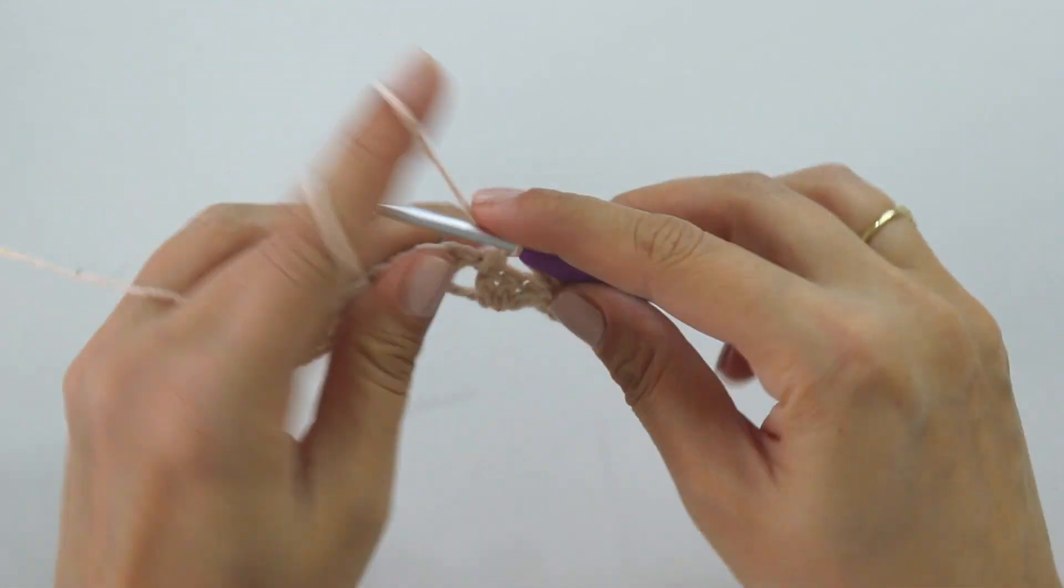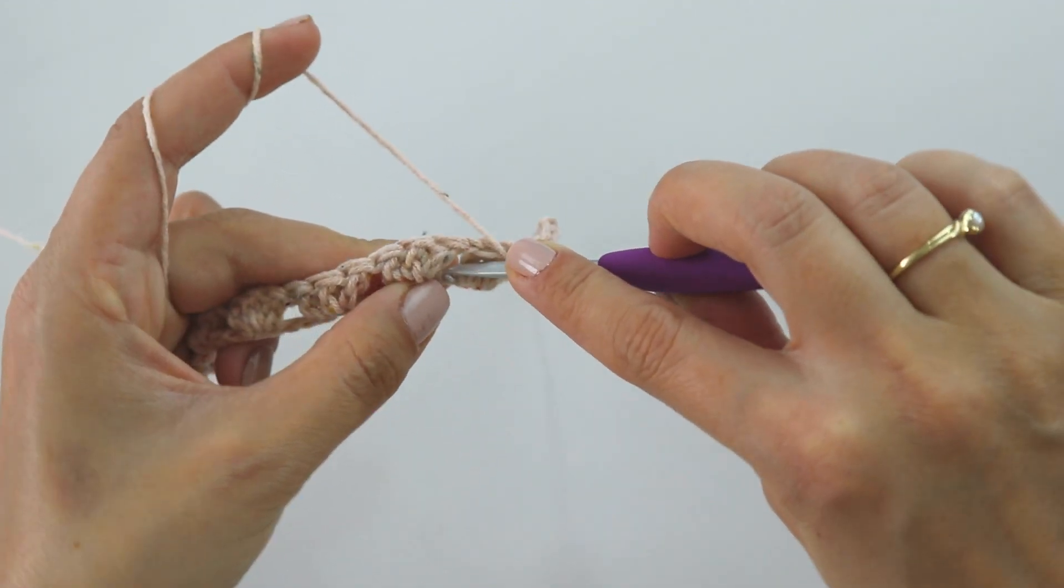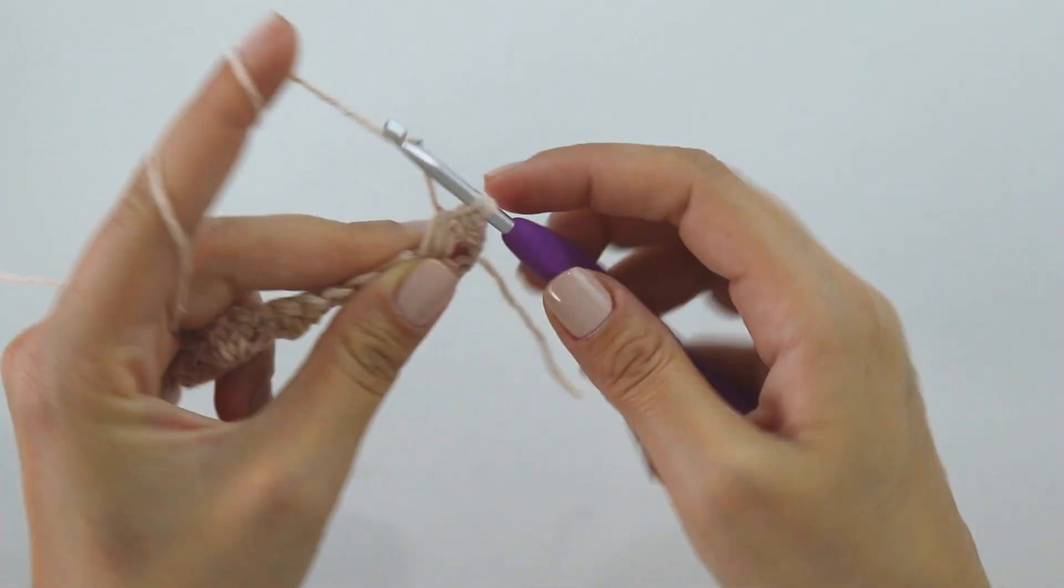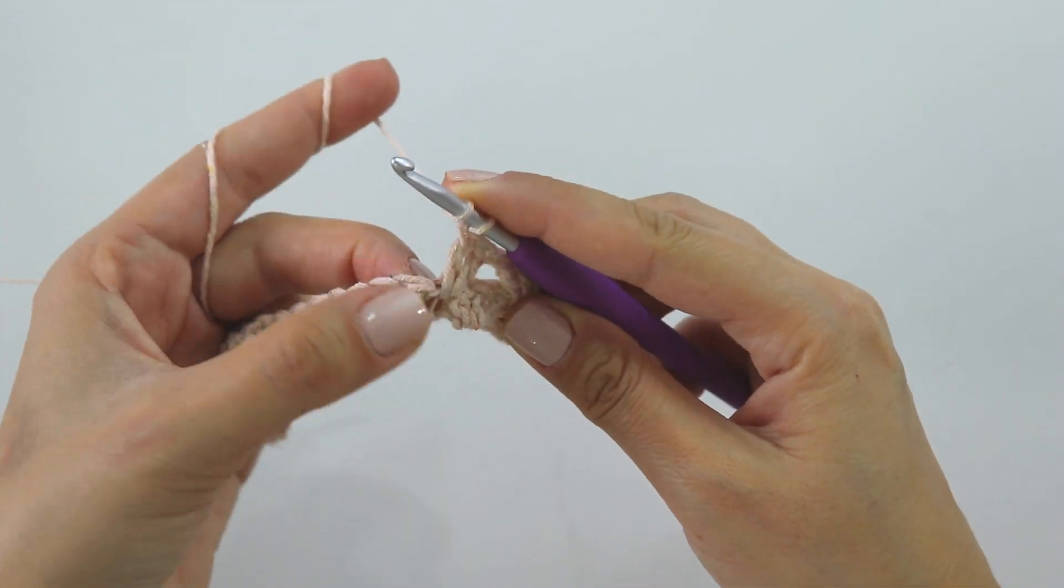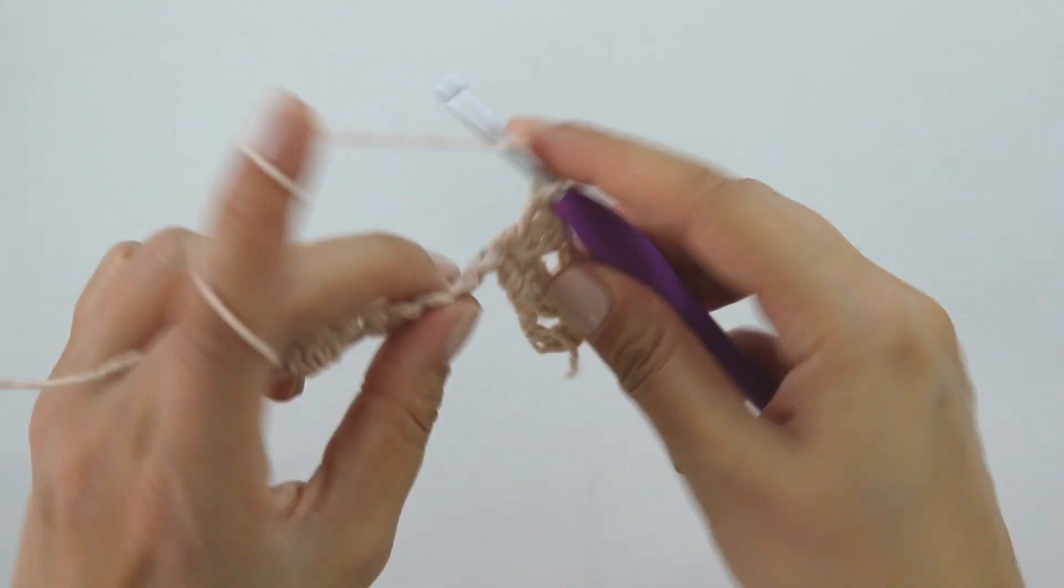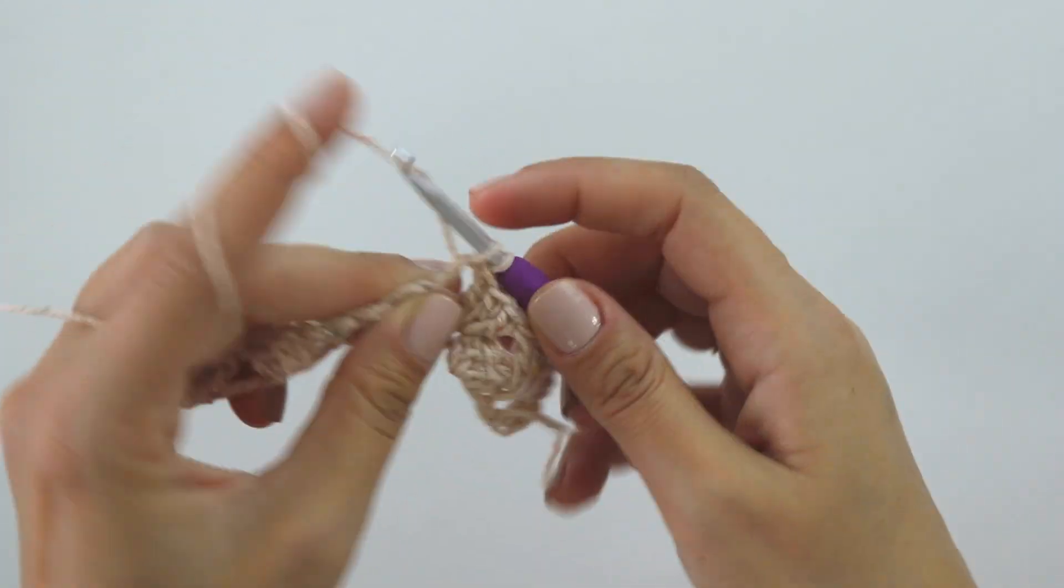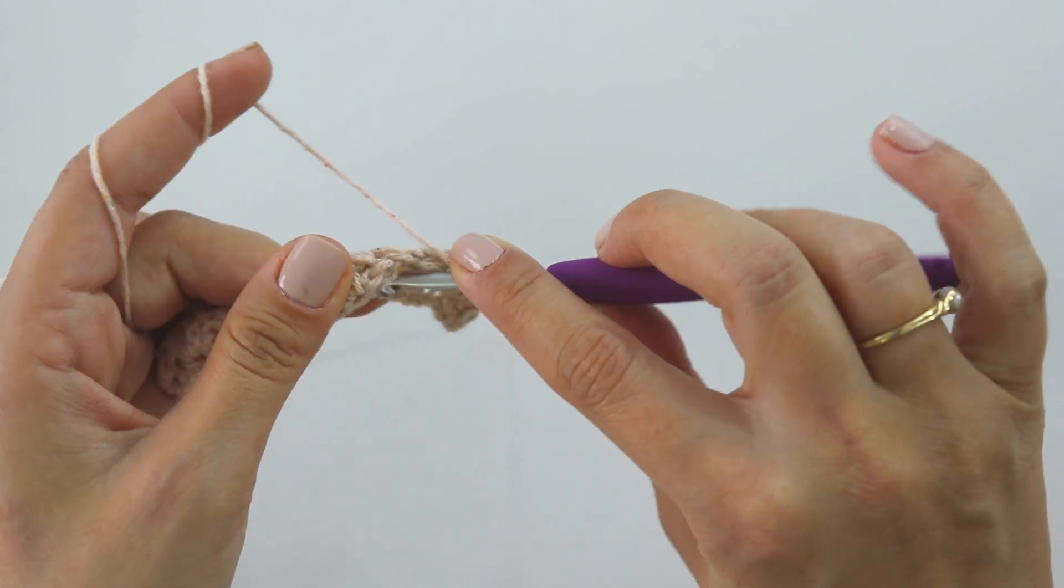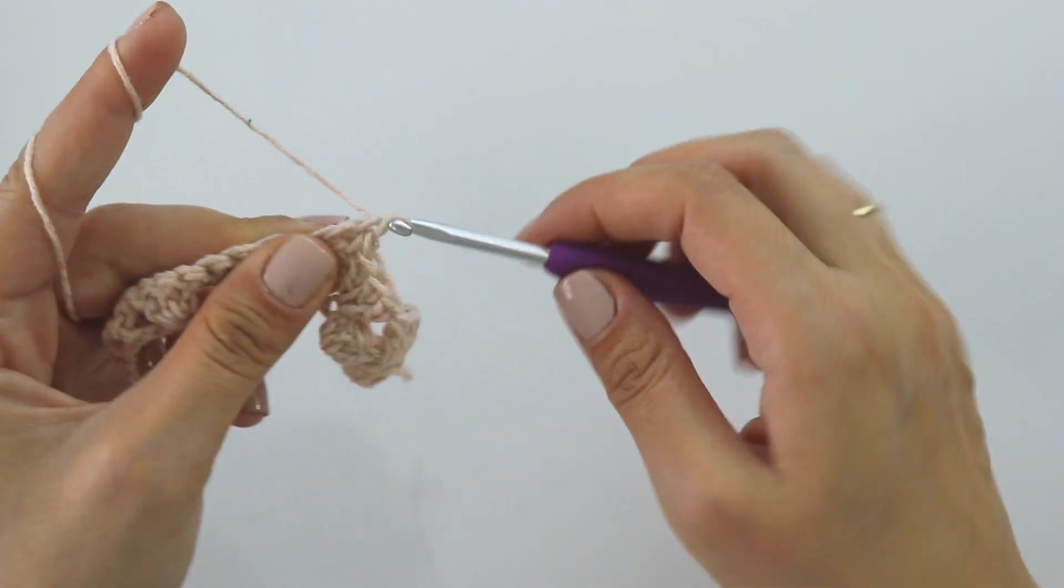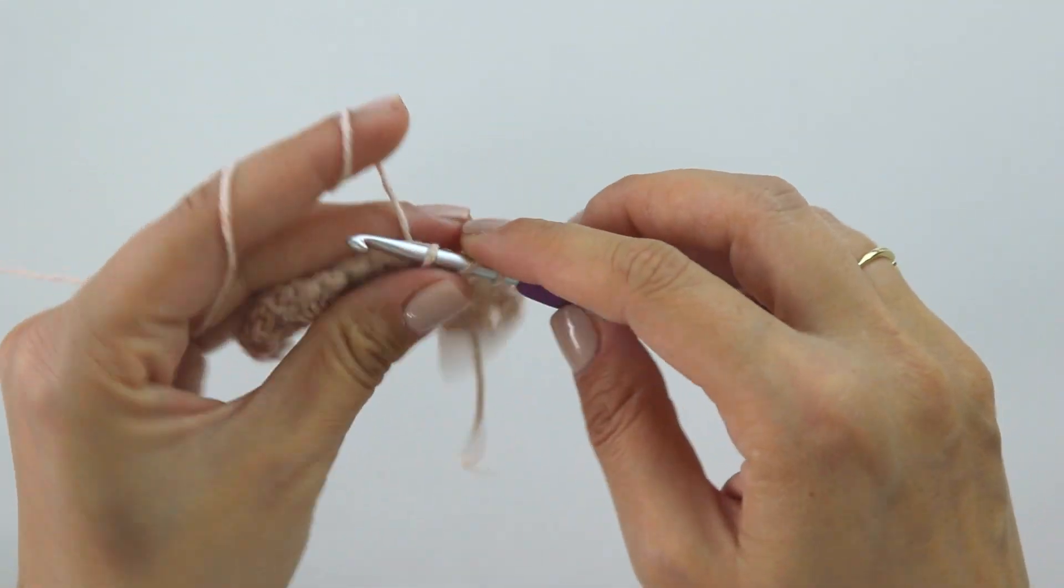Make a double, yarn over. Yarn over, insert into this chain, make a double. And make a double into the next. A double, a long double, and a double.